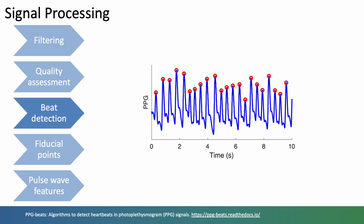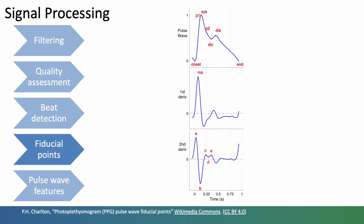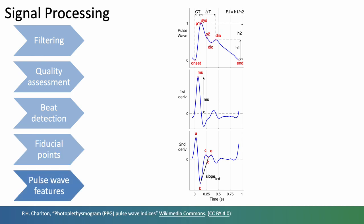Typically we then detect beats in the signal shown here with red dots which allows to identify individual pulse waves for analysis. So a pulse wave is shown in the top plot here. We then identify fiducial points on the pulse wave such as the systolic and diastolic peaks or points also on the first and second derivatives shown below, and from these points we can then extract pulse wave features such as the time delay between systolic and diastolic peaks shown by delta t in the top plot.